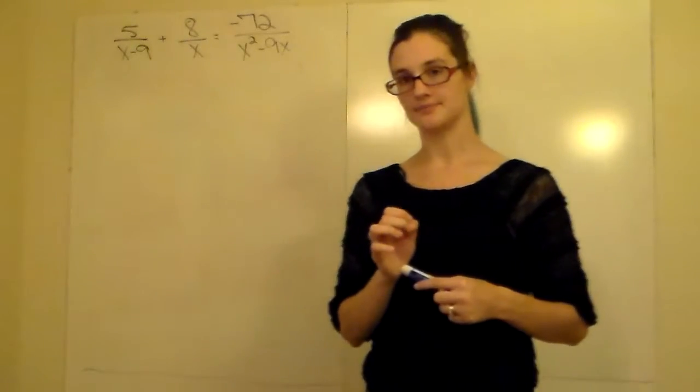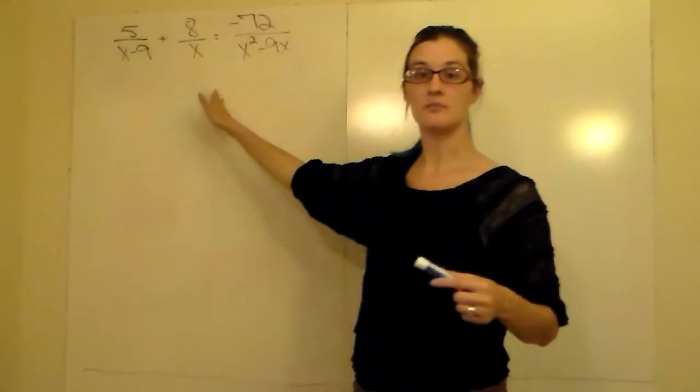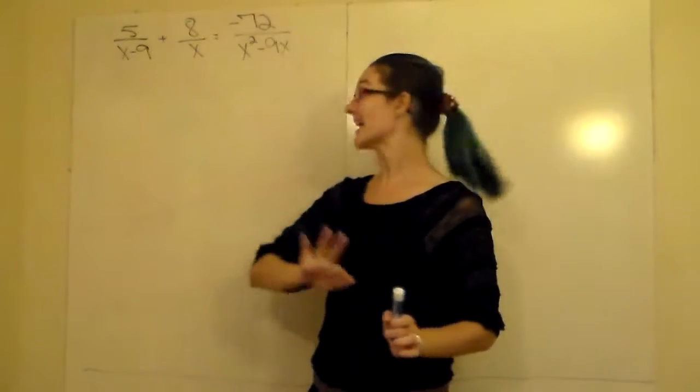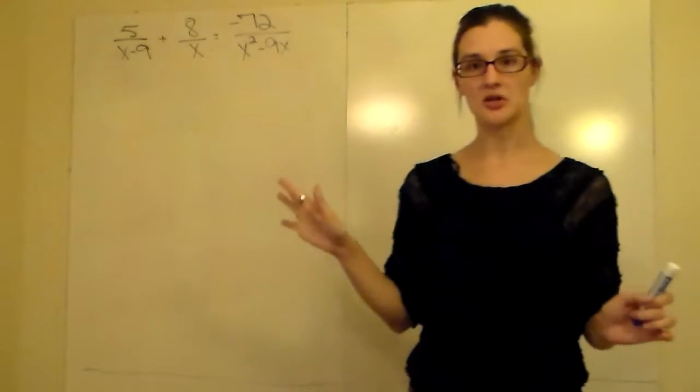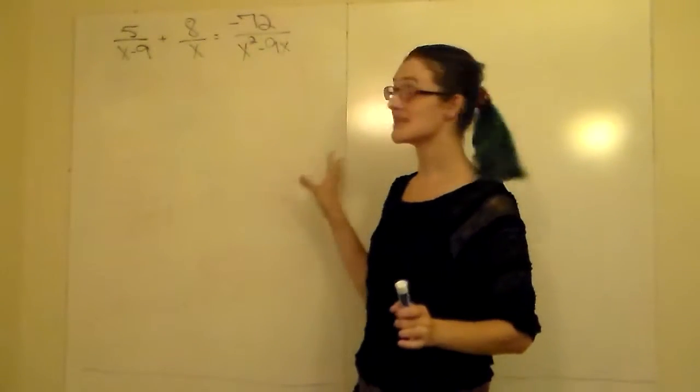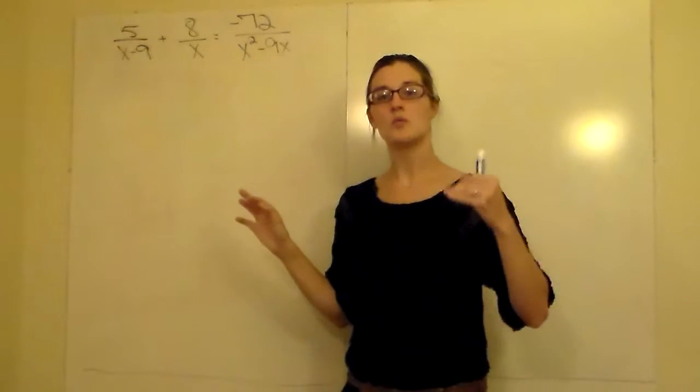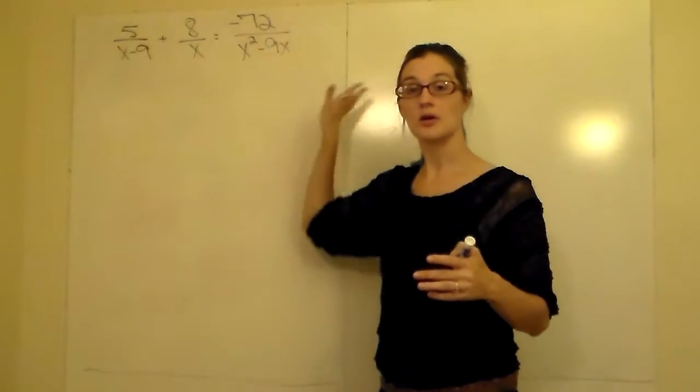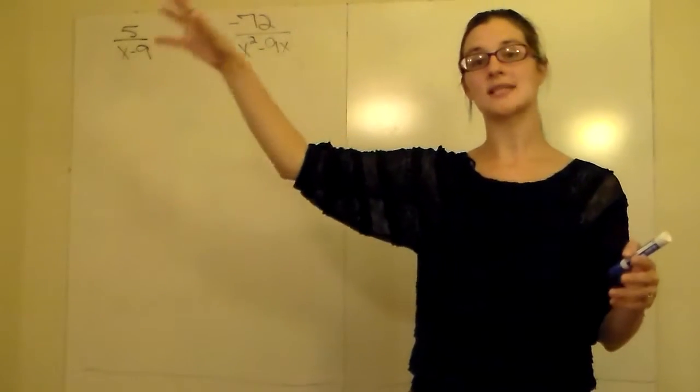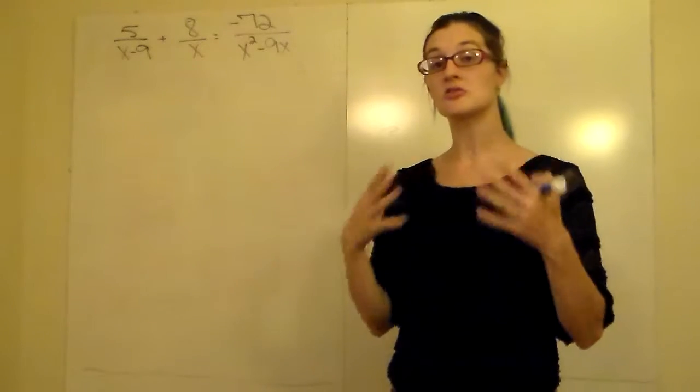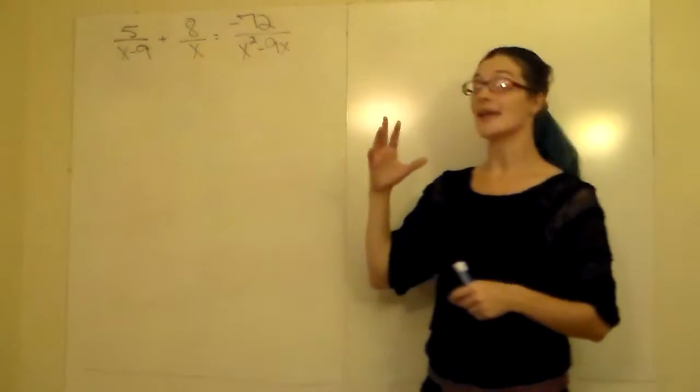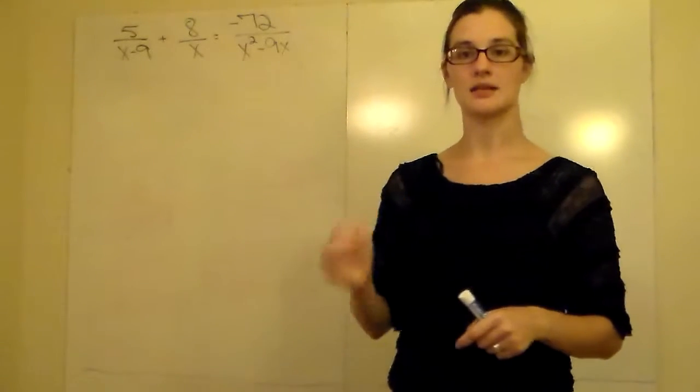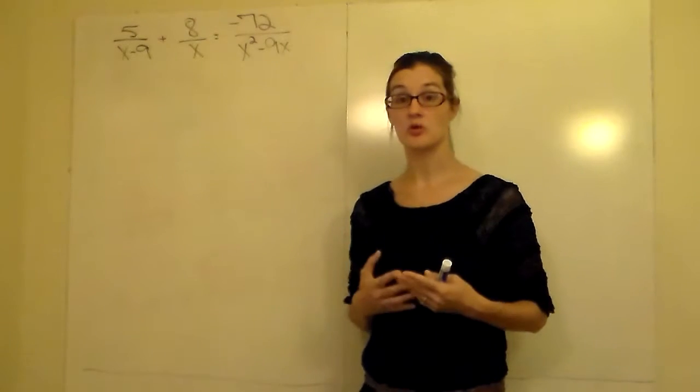If you have an equal sign, that is the only time that you're able to just eliminate all the fractions. Now we can't just ignore half the problem. We can't just ignore the fractions, but in one to two steps we can get rid of them and eliminate them. We're going to find the LCD, multiply it to all the numerators, and let the fractions reduce away. Again, if you do not have an equal sign, you cannot eliminate the fractions this way at all. You just have to work with them.